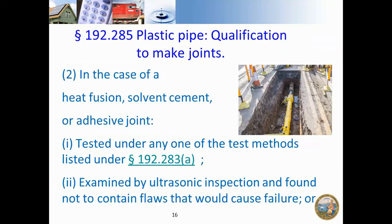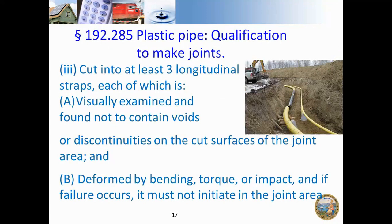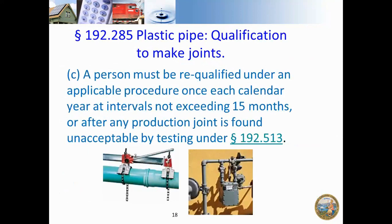Heat fusion, solvent cement, or adhesive joints are tested under any of the test methods listed under 283A. Ultrasonic inspection may also be used to ensure there is no failure. Testing also involves cutting into at least three longitudinal steps, visual examination, and deformation by bending, torque, or impact — any failure must not initiate in the joint area, meaning the joint is acceptable if it passes this test. A person must be requalified every 15 months maximum, if found acceptable by testing under Section 513.